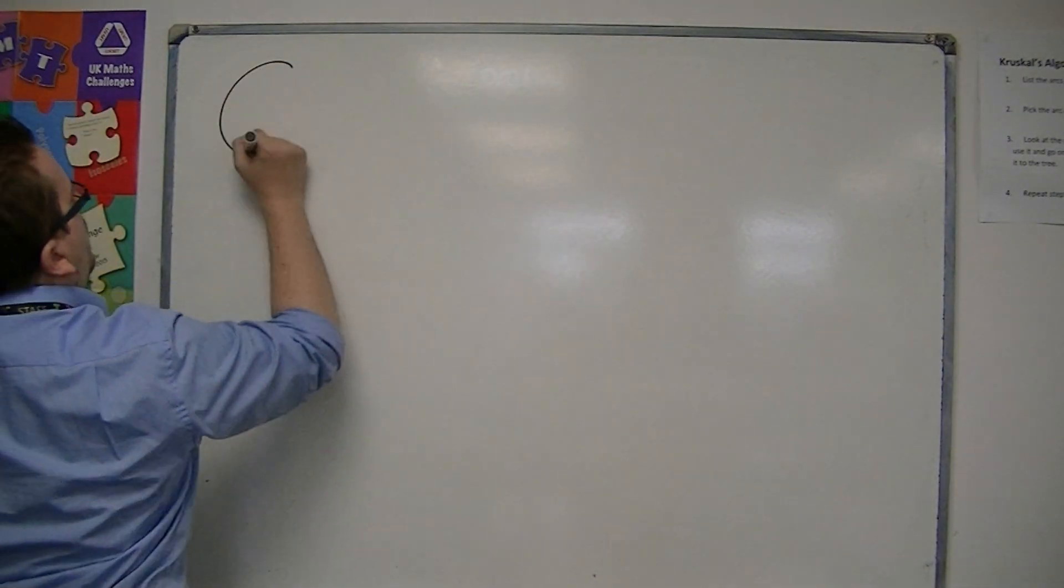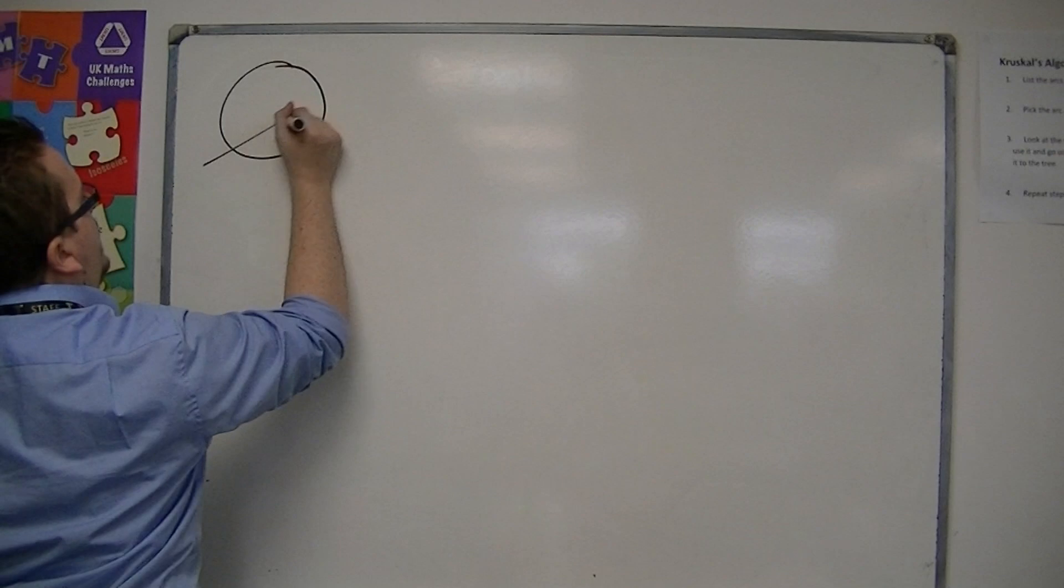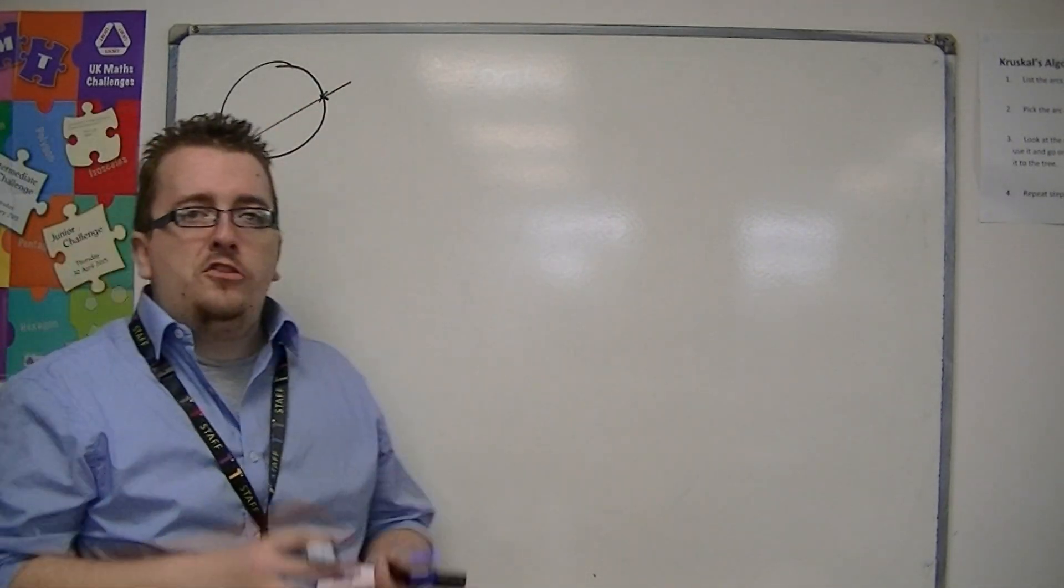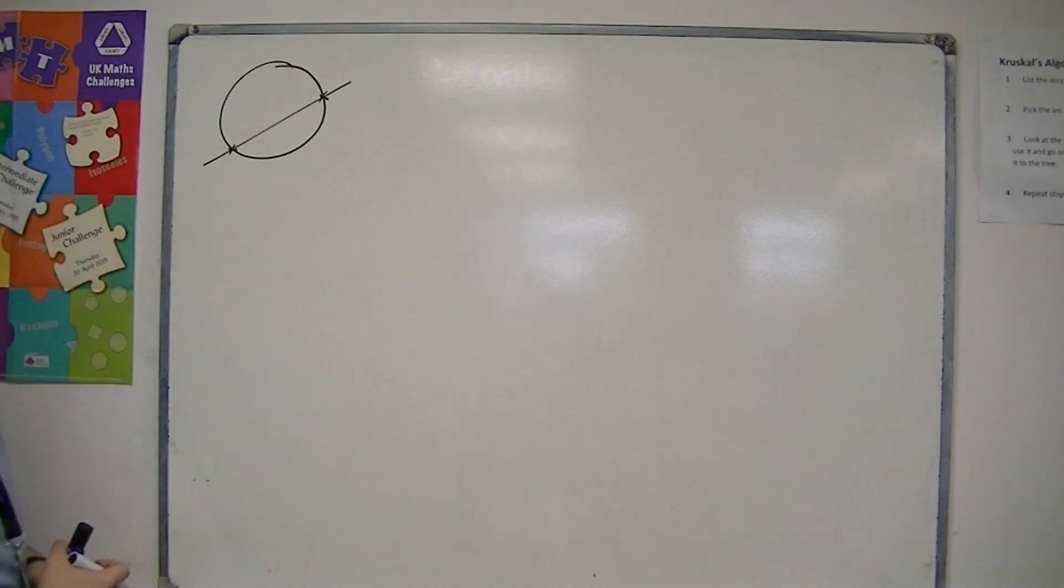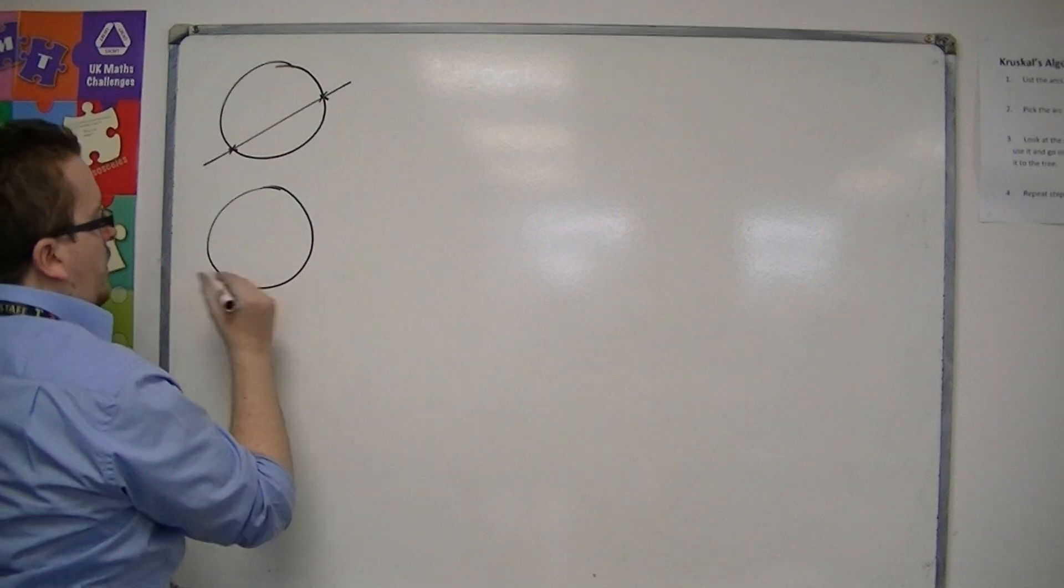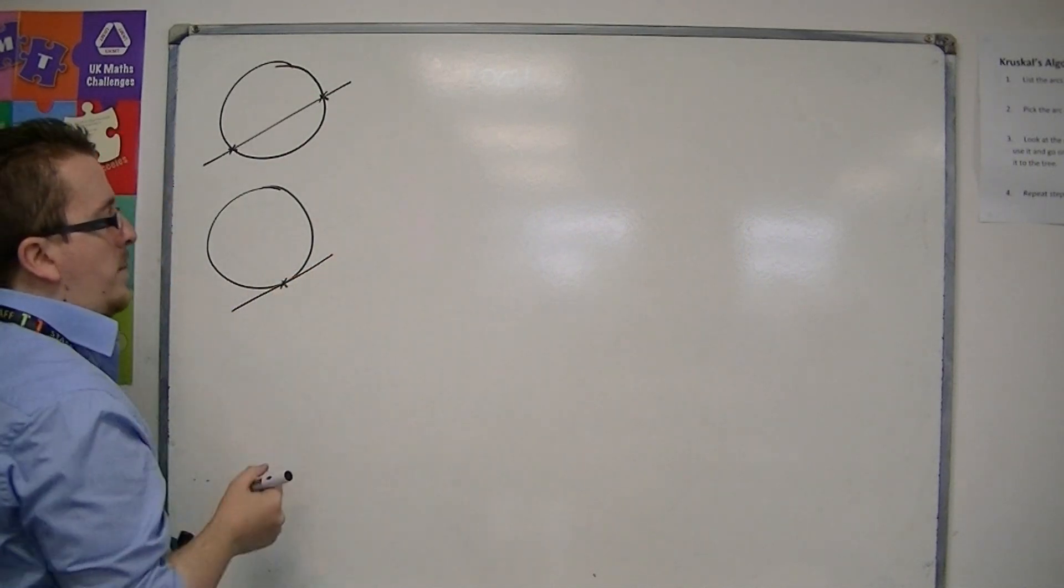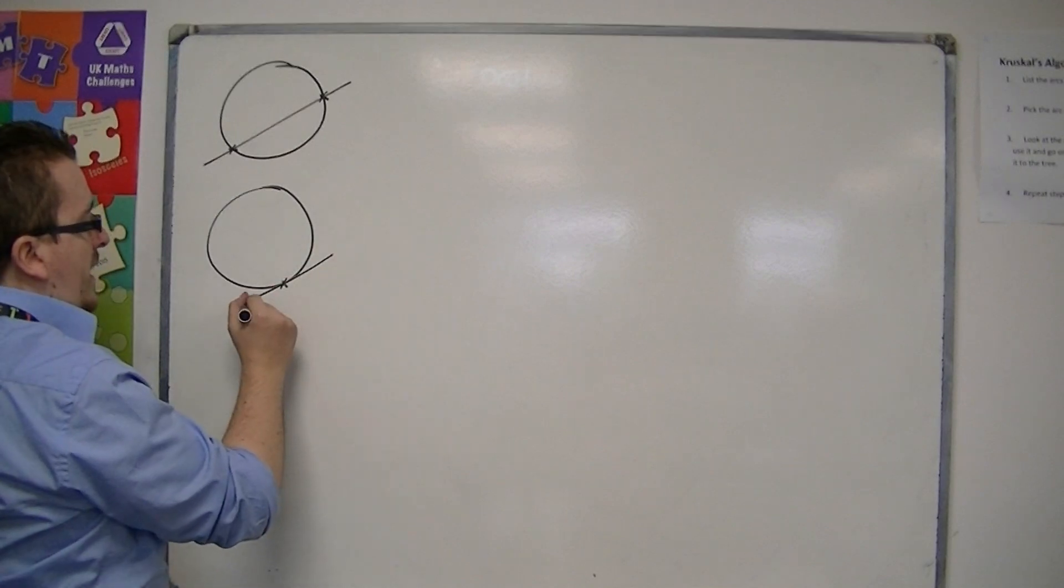You could have that the circle and the line intersect one another, and therefore you're going to get two points, two distinct points of intersection. You could have the line just touching the circle at one point, and hence you would have a tangent.